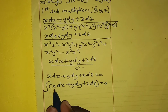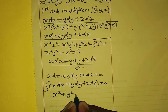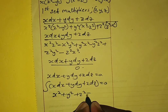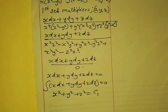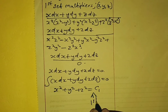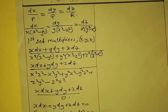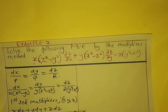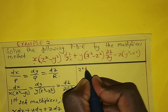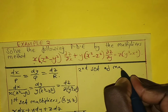Integrating, we get x² plus y² plus z² equals c₁. This is our first solution. Next, we choose a second set of multipliers.